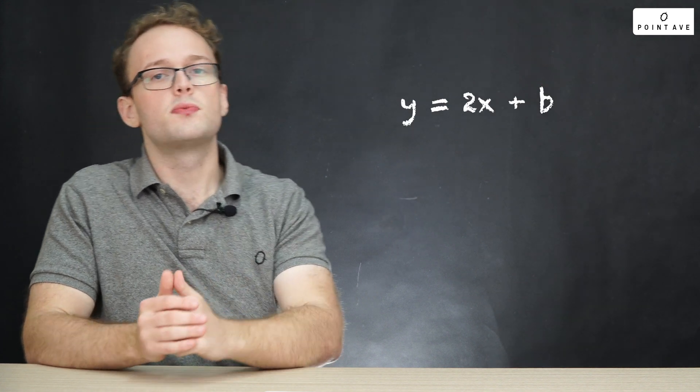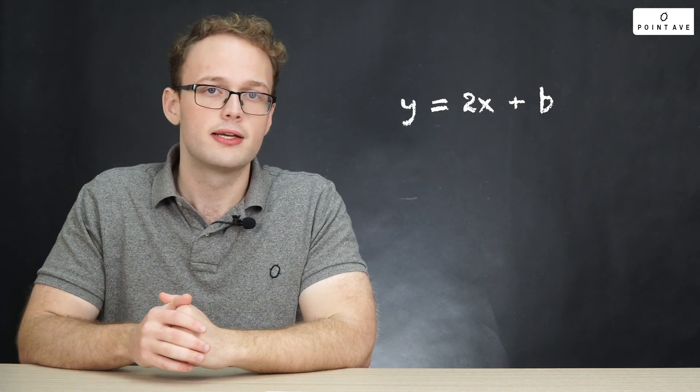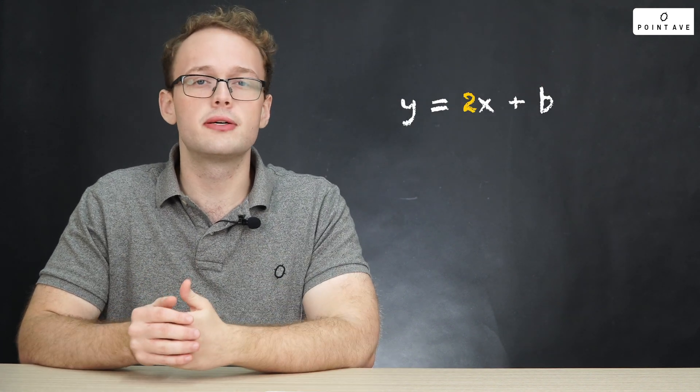Hooray! So now we have m, our slope. This slope equal to 2 means that every year that we move forward in time, our tickets go up by $2. So our equation so far we see here, it's y equals 2x plus b. We found m is equal to 2, but we don't know yet b.